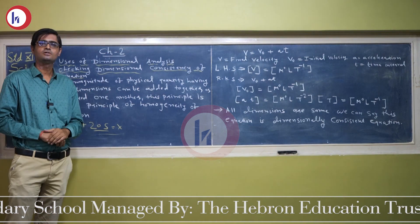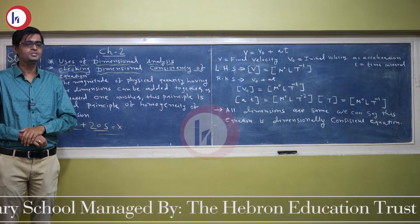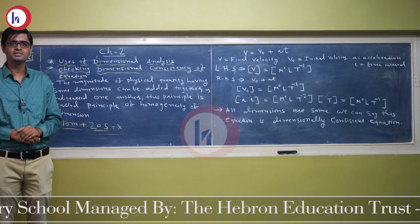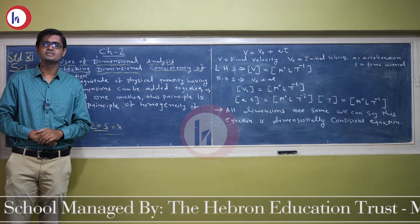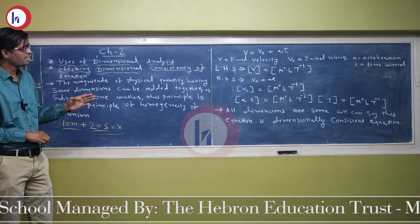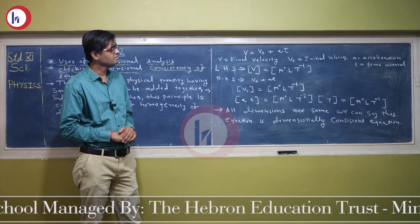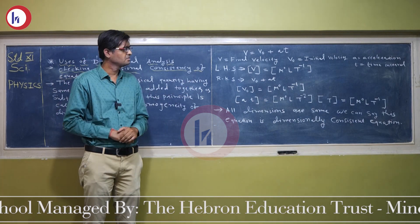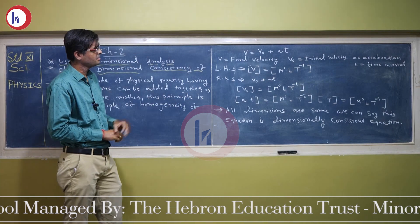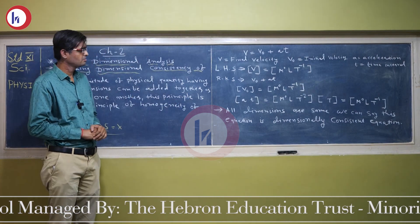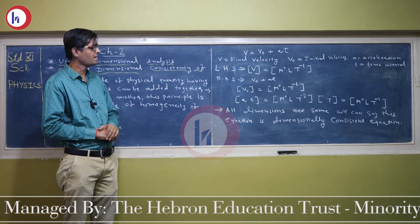We will take the equation V = V₀ + AT, where V is the final velocity, V₀ is the initial velocity, A is acceleration, and T is the time interval. We want to see whether this equation is dimensionally consistent or not.